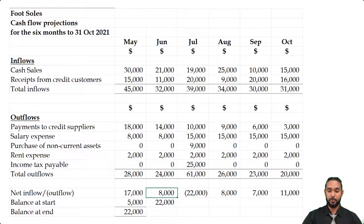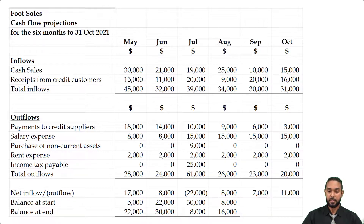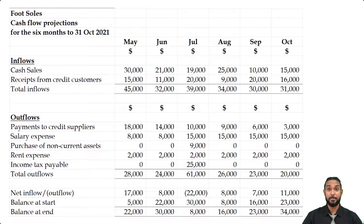The balance carried forward is $22,000 — starting with $5,000 and adding a surplus of $17,000. The balance at the end of one month becomes the opening balance for the next. End of June: $30,000; that becomes July's opening balance. July has a deficit of $22,000, leaving $8,000 going forward. August: $8,000 + $8,000 = $16,000. September opening: $16,000 + $7,000 = $23,000. October: $23,000 + $11,000 = $34,000. And that's the completed cash flow projection.